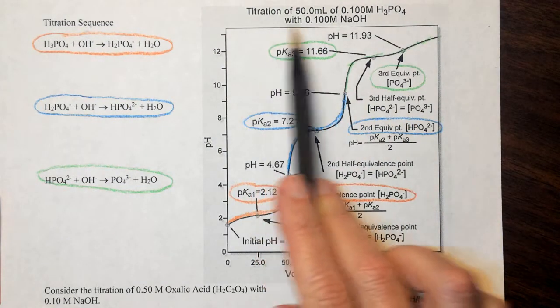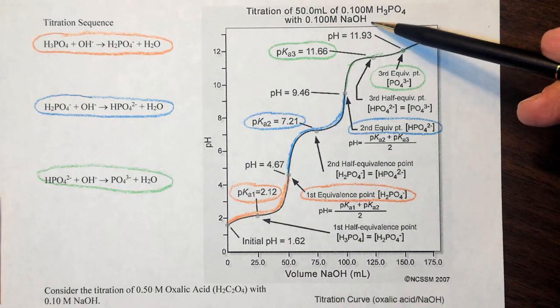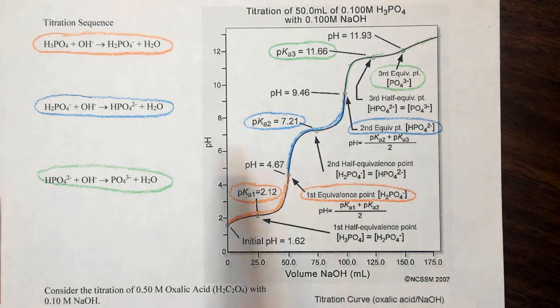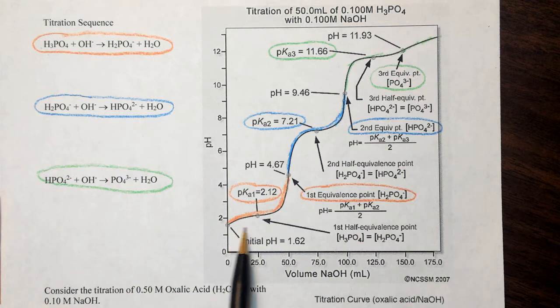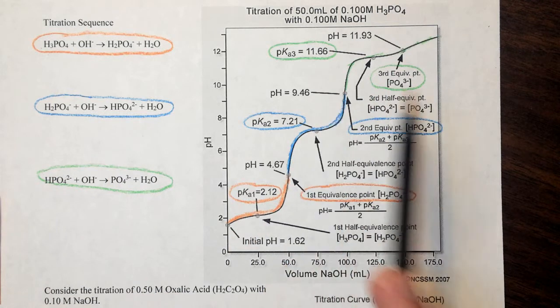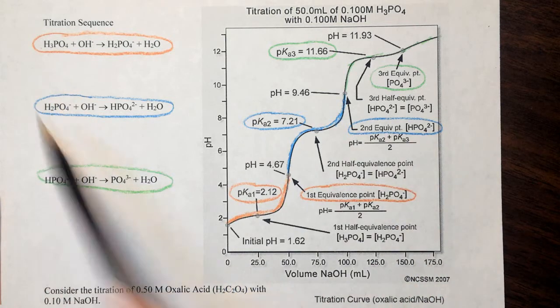What I have here is the titration curve for 0.1 molar phosphoric acid being titrated with 0.1 molar sodium hydroxide. I've color-coded each one of the deprotonation steps to match up to the points along the titration curve. So let's start at the very beginning with just 0.1 molar H3PO4.